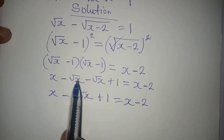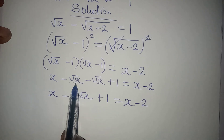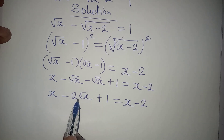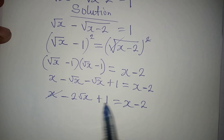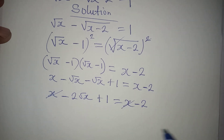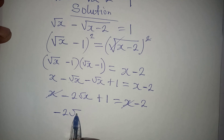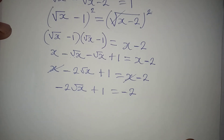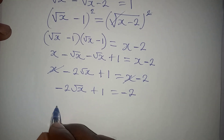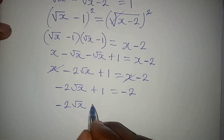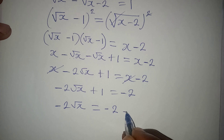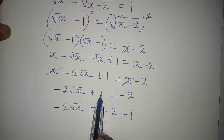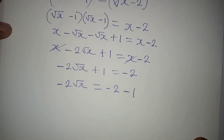From here, the two middle terms — minus root x and minus root x — are combined to give minus 2 root x plus 1, equal to x minus 2. Now x and x on both sides cancel each other, leaving minus 2 root x plus 1 equal to minus 2. Collecting like terms, minus 2 root x equals minus 2 minus 1.